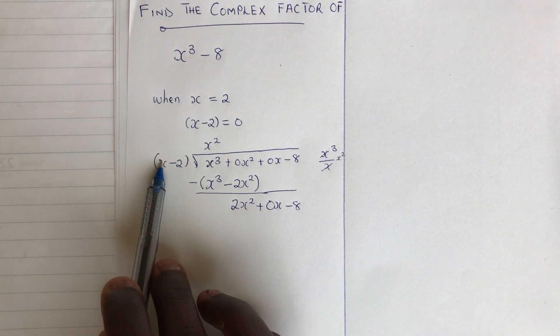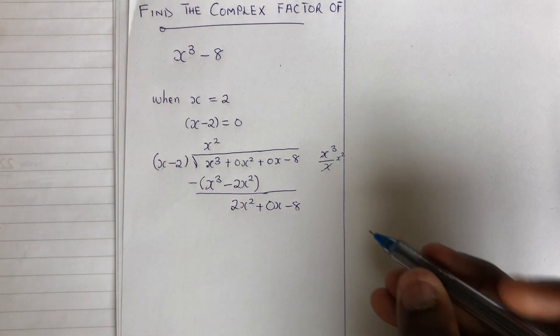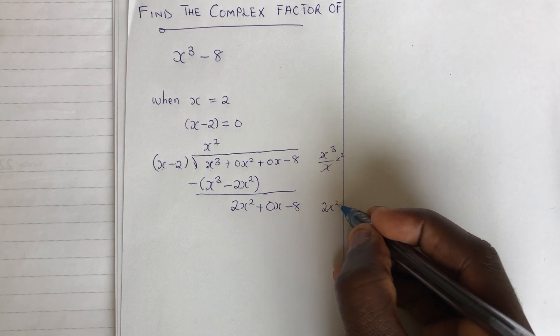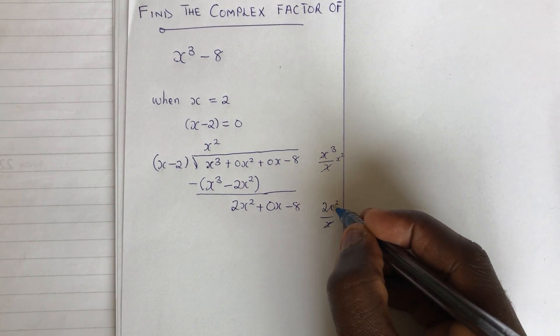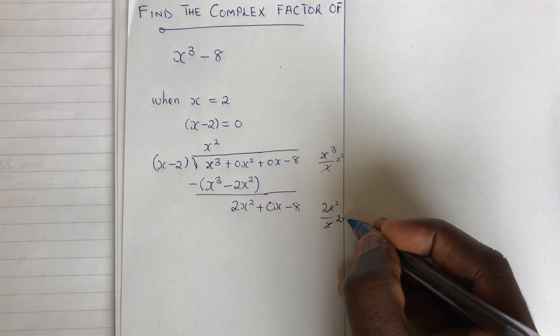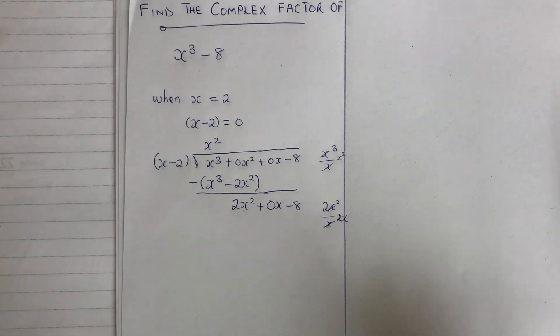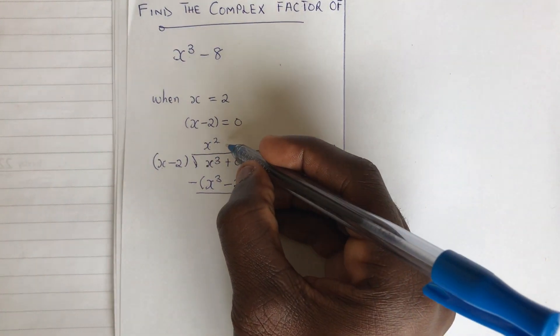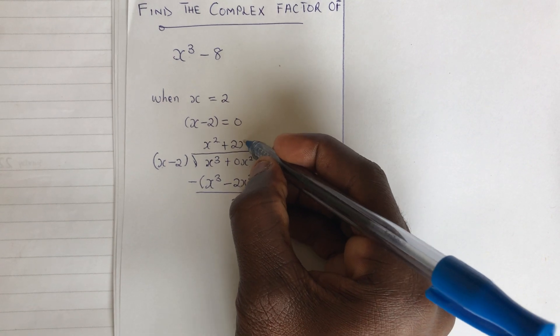Now, we start all over again. Pick x. Use it to divide this one. So we have 2x squared dividing x. This will take care of this. We are left with 2x. Now, write the 2x here. So we have plus 2x.